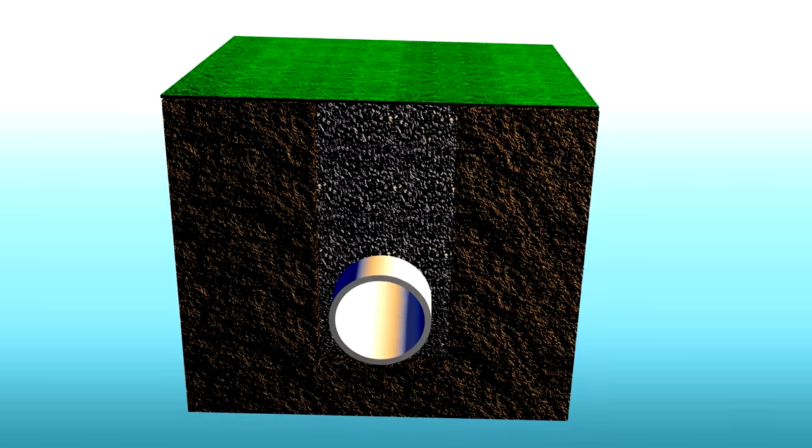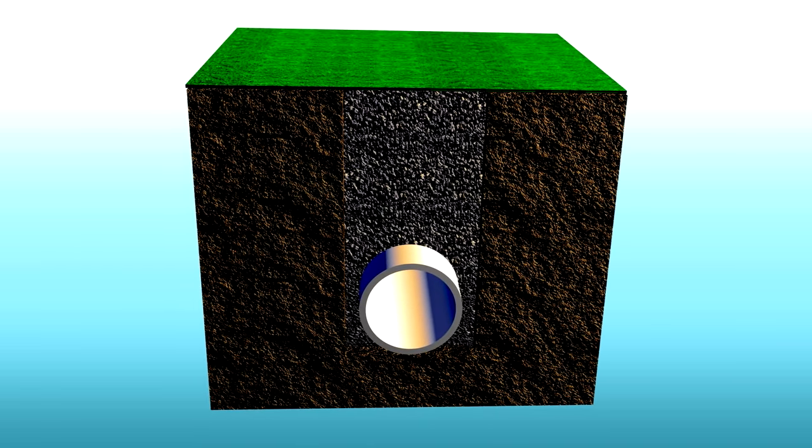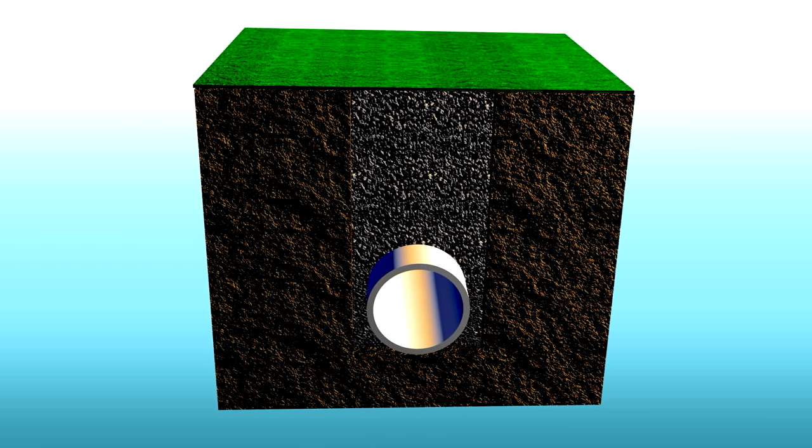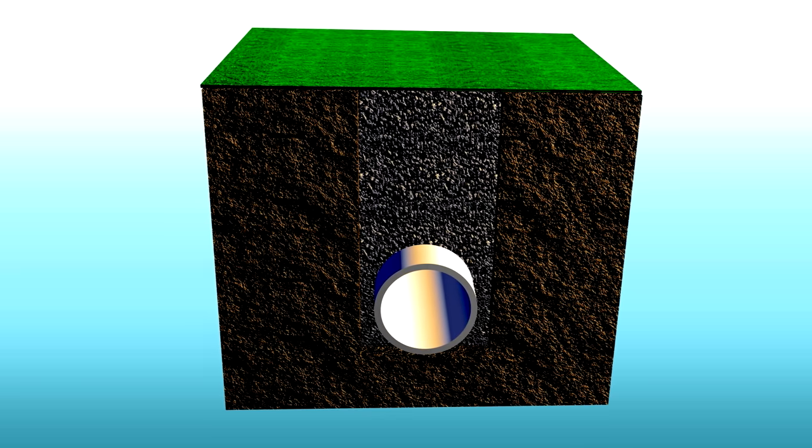It is good practice to backfill as pipe-laying progresses, leaving 300mm exposed on either side of joints for testing.